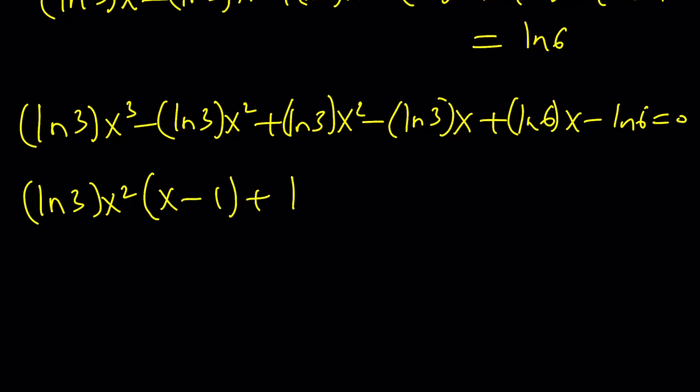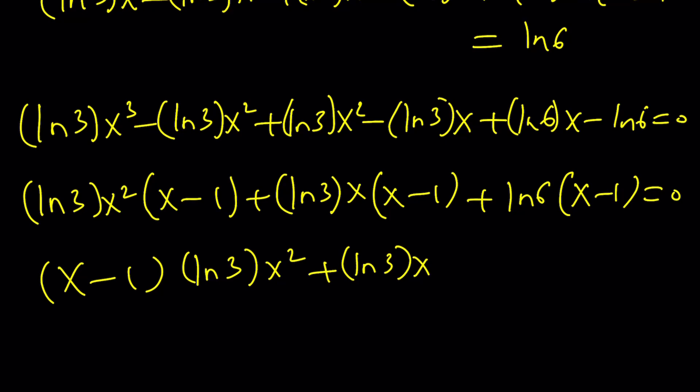Now when you go ahead and take out some terms like ln 3 times x squared, this is going to give you x minus 1. When you take out ln 3 times x, this is going to give you x minus 1. And finally when you take out ln 6, you're going to get x minus 1. Notice that x minus 1 is a factor which also shows one more time that x equals 1 is a solution. And then this gives you the quadratic factor. This is going to be your quadratic.